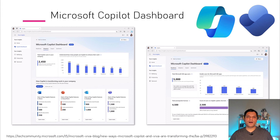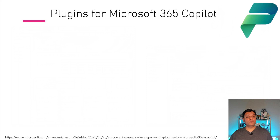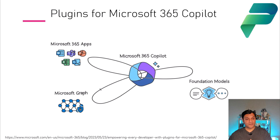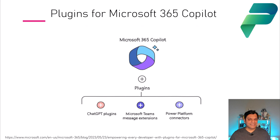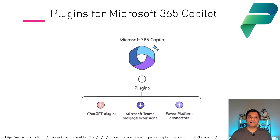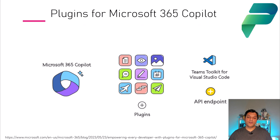We've talked about different flavors of Copilot both in and outside Microsoft 365. But what happens when your Copilot is incomplete or not available for Microsoft 365? In that case, you can build your own plugins. Plugins are built using a combination of Microsoft 365 Copilot's inheritance with Microsoft Graph, Microsoft 365 apps, and foundational models. You can build a Microsoft 365 Copilot plugin using ChatGPT plugins, Microsoft Teams message extensions, and over a thousand Power Platform connectors. You can also build custom plugins using the Teams Toolkit for Visual Studio Code and any API endpoint you have access to.